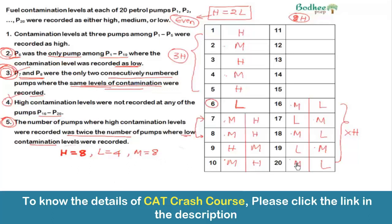With H = 8, counting the H values in Case 1 (P7, P8 = M): P1, P3, P5, P9 gives four H from P1 to P10. We need four more H from P11 to P15. But with the no-consecutive constraint, at most three H fit in five consecutive positions. So Case 1 is impossible, and we eliminate it entirely.